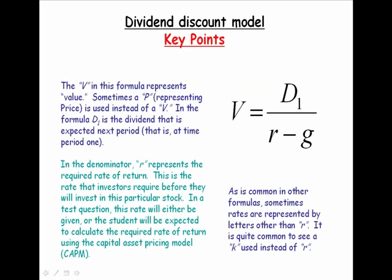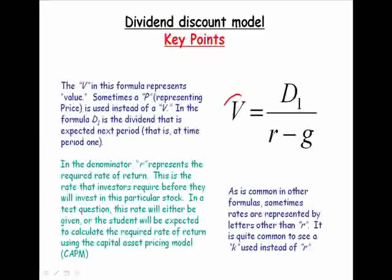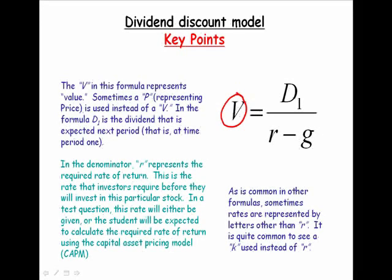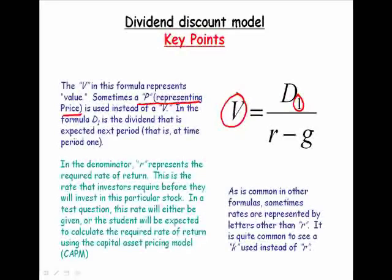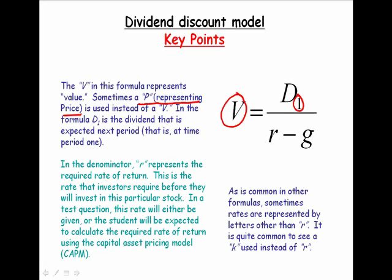Let's look at the key points of the dividend discount model. V in the formula is value, the intrinsic value of the stock. Sometimes a P will be used, which represents price. Don't panic, it's the same formula. In the numerator, we've got D1. Notice again the subscript 1. That means the dividend 1 period from now. It's a dividend that has not yet been paid. It is a future dividend.